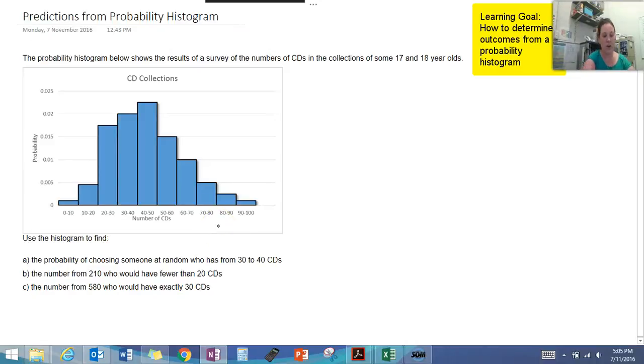Hi guys, this video is about how to determine the probability of certain events occurring from a probability histogram. We've got our histogram here showing probability from a survey of people owning CDs in the year 17 to 18. For question A, we're asked to find the probability of choosing someone at random who has 30 to 40 CDs.